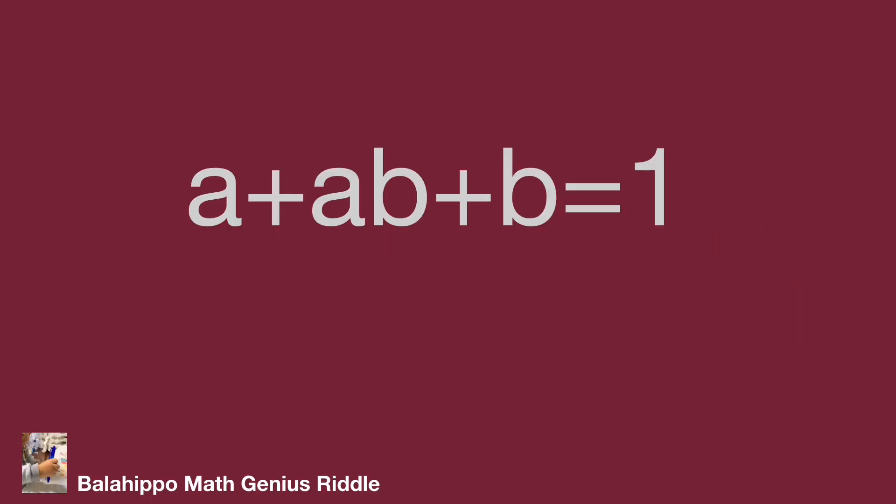The given information is simple. a plus ab plus b equals 1, and a, b are integers. How to find the value of them?